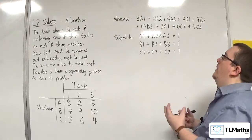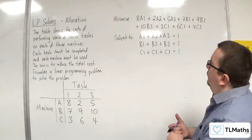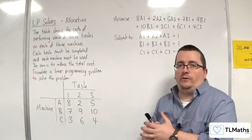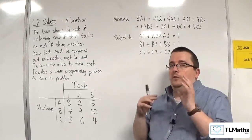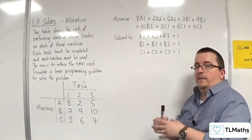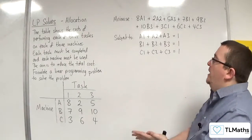However, that by itself is not good enough, because we could have A1, B1, C1, which means that all three machines are doing task 1. So we can't have that. So we've got to have constraints that say that each task can only be done by one machine.